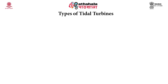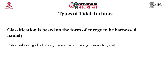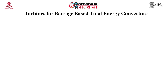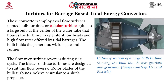The classification of tidal turbines is based on the form of energy harnessed: potential energy by barrage-based tidal energy converters, and kinetic energy by tidal stream-based hydro kinetic turbines. Turbines for barrage-based tidal energy converters employ axial flow turbines named bulb turbines or tubular turbines to operate at low heads and high flow rates offered by tidal barrages.